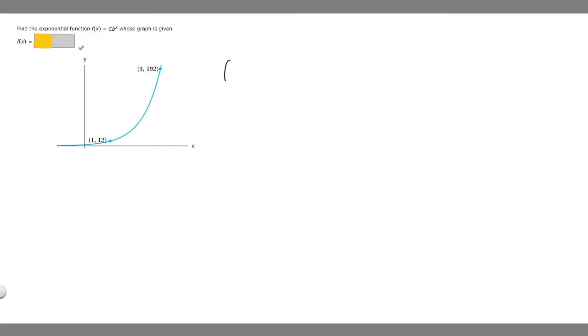The first thing we should do is write down our formula. We know that f(x) = c*b^x. This is an exponential function formula. In order to solve this problem, we're given two points and we're going to create two different equations.